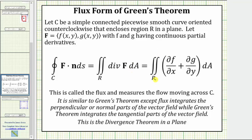This gives the double integral over the region R of the partial of F with respect to X, plus the partial of G with respect to Y, differential A, where F is the X component and G is the Y component of the given vector field. The flux measures the flow moving across the curve C. It is similar to Green's theorem, except flux integrates the perpendicular or normal parts of the vector field, while Green's theorem integrates the tangential parts. This is sometimes referred to as a divergence theorem in a plane.